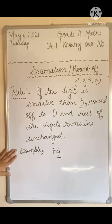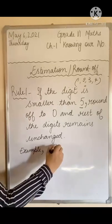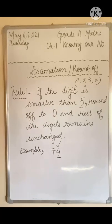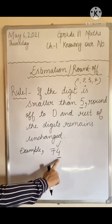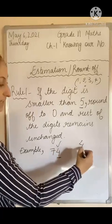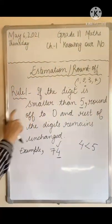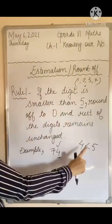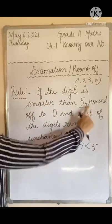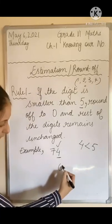Let's understand the first rule with an example. I have written here the number 74, out of which I want to round off the digit 4. According to rule number 1, the very first step is to check if this number is less than 5 or greater than 5. Since 4 is less than 5, rule number 1 will apply. The digit is smaller than 5, so we are going to round it off to 0.